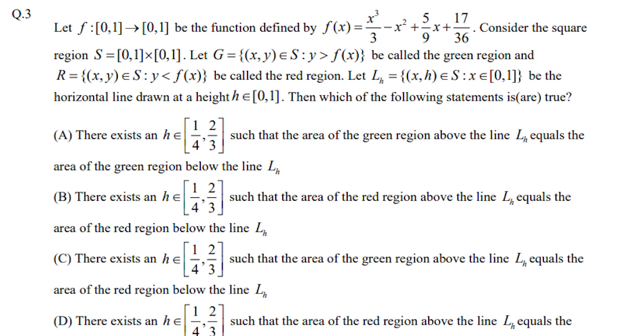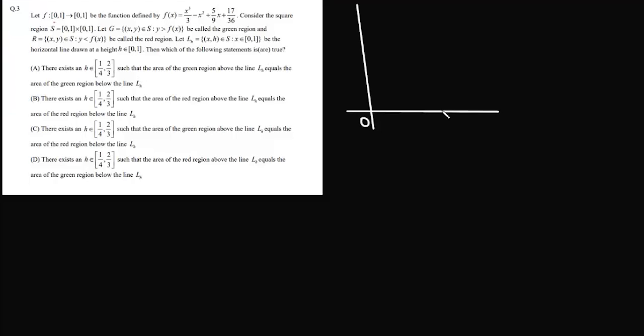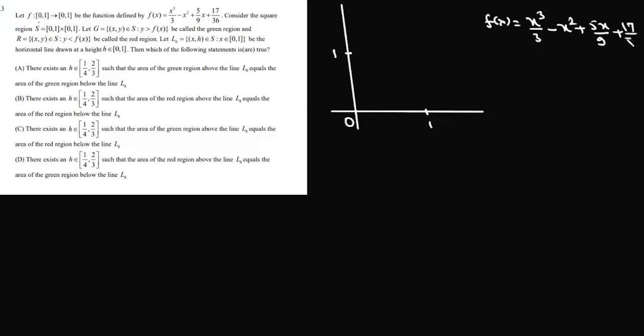Question number 3 is a very interesting question. It requires a lot of calculation and a lot of analysis. We are given a function defined on [0,1] to [0,1], so it is defined on the unit square. The function f(x) is given as x³/3 - x² + 5x/9 + 17/36.